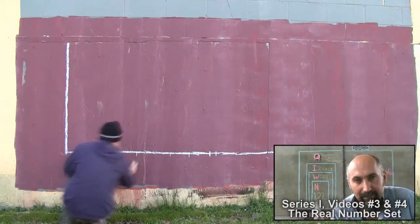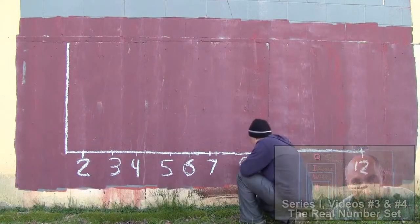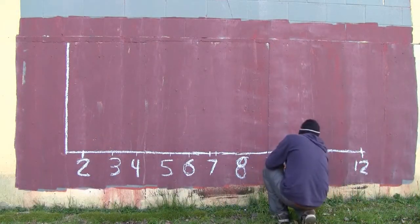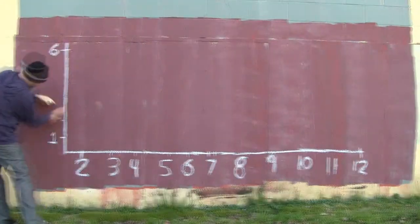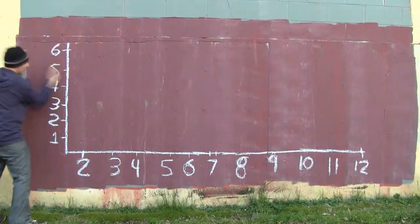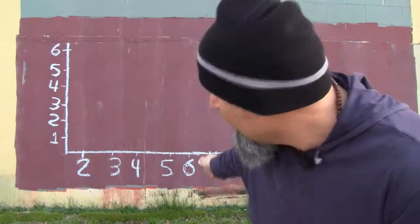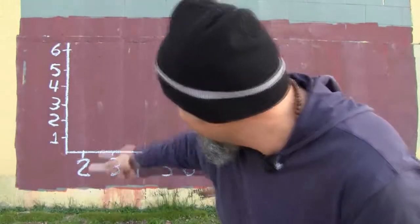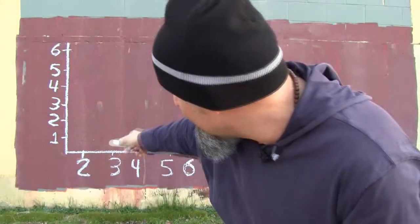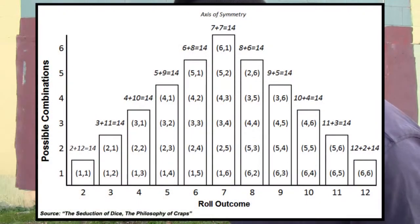The lowest number you can get is a two and the highest is a 12, with the counting numbers in between: three, four, five, six, seven, eight, nine, ten, eleven, twelve. On the y-axis we put the possible outcomes — the different ways we can get each number. The maximum possible outcome is with the seven, which has six ways. The lowest possible outcome is one way to get a two or a 12.